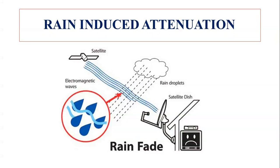Hi everyone, myself Josie Brasad. Today we are going to discuss about rain-induced attenuation in satellite communication. In satellite communication, we have two segments: one is the ground station, and the other is the satellite, which is the space segment.